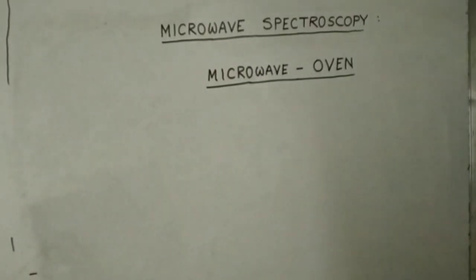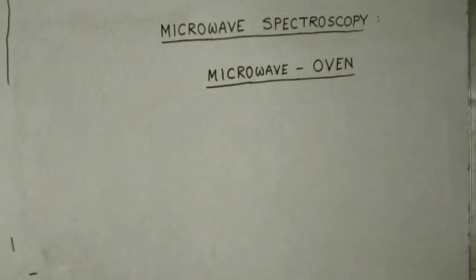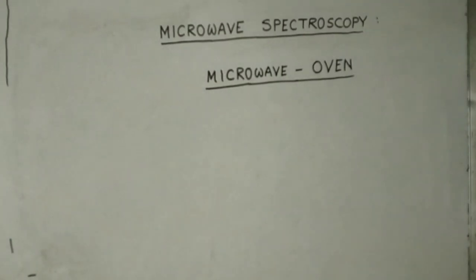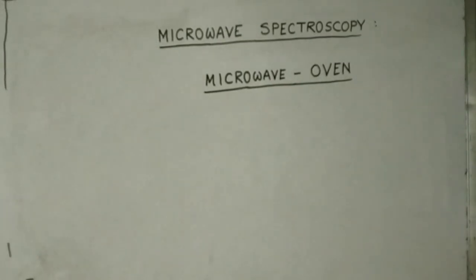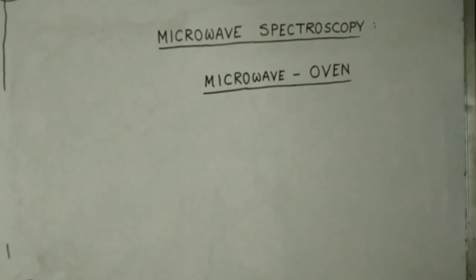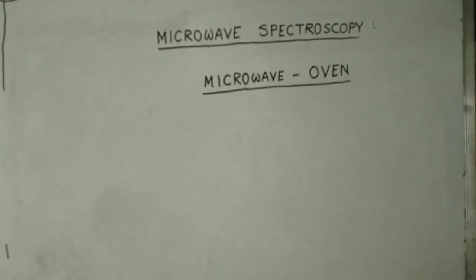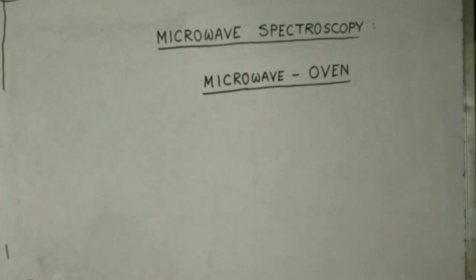One area where microwave radiation has become very familiar in recent years is the kitchen, in the shape of the microwave oven. When food is placed in a microwave oven and switched on, the food molecules are bombarded with microwaves. It is the water molecules in the food which absorb the microwave radiation and become raised into higher rotational states. Water molecules are microwave active because they have a permanent dipole moment.